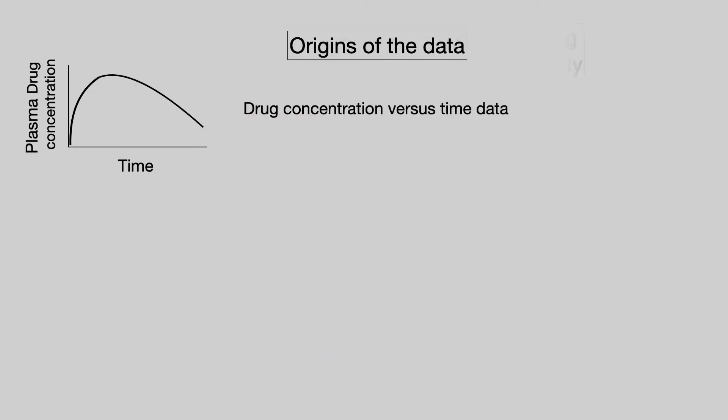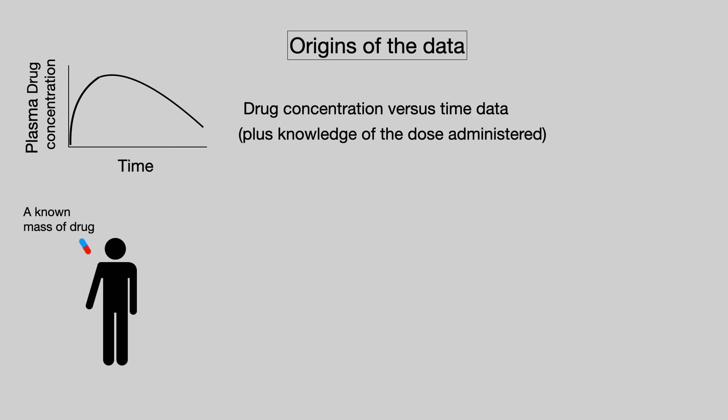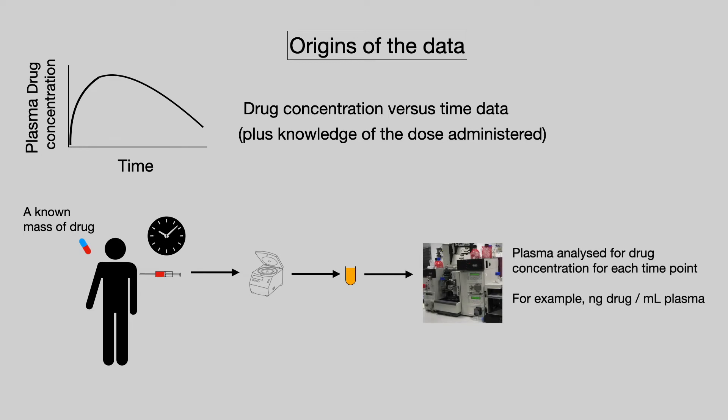You can see from this, therefore, that the data that we're dealing with is drug concentration versus time. We also need to have knowledge of the dose administered. So our individual takes some known mass of drug. Blood samples are taken from that individual at predefined time points. The blood is centrifuged to produce plasma and the plasma is analysed for drug concentration. We then end up with, for example, nanograms of drug per milliliter of plasma for each of the time points where blood was sampled.